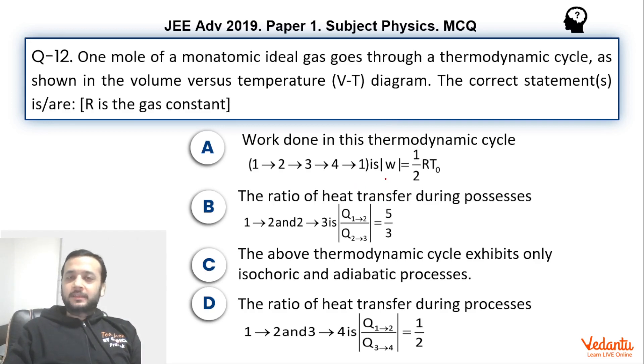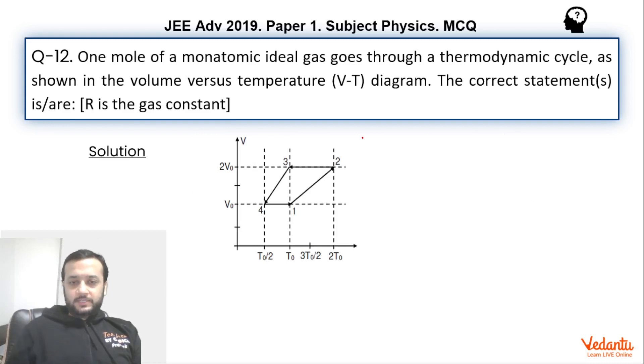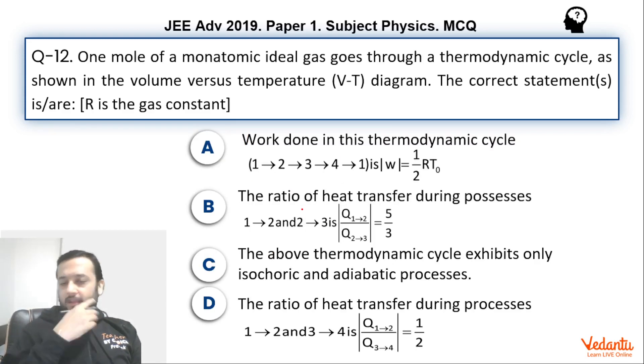Almost all the students in India, if they have ever studied physics or thermodynamics, would have done this question. So basically this was a diagram that was also given in the question. You can see this is a cycle, a thermodynamic cycle, and a V-T diagram has been given. Based upon that diagram, we were asked some options. The gas was monatomic and one mole of the gas was taken.